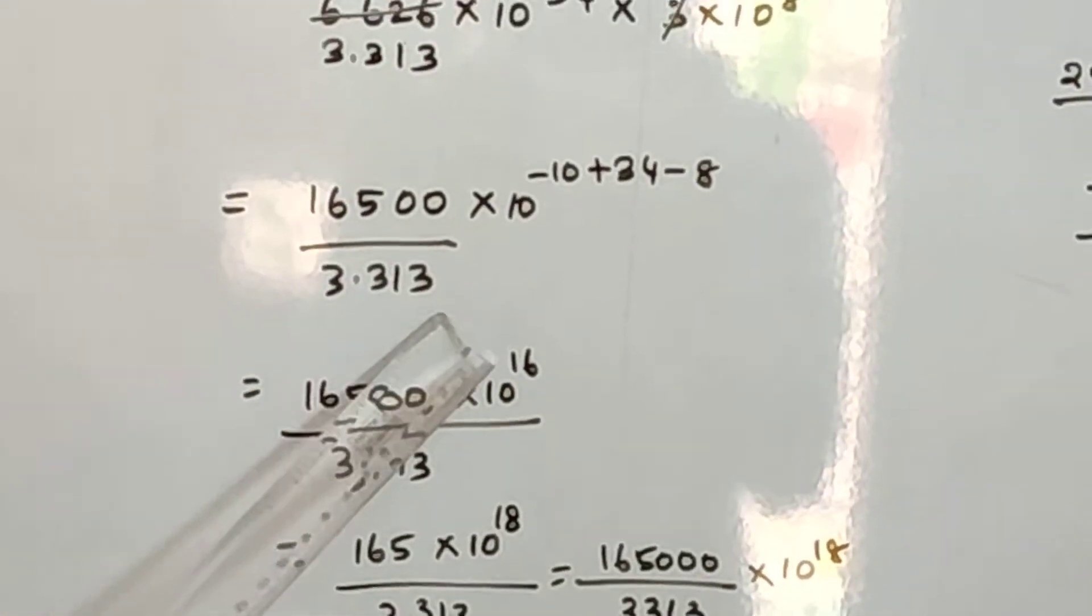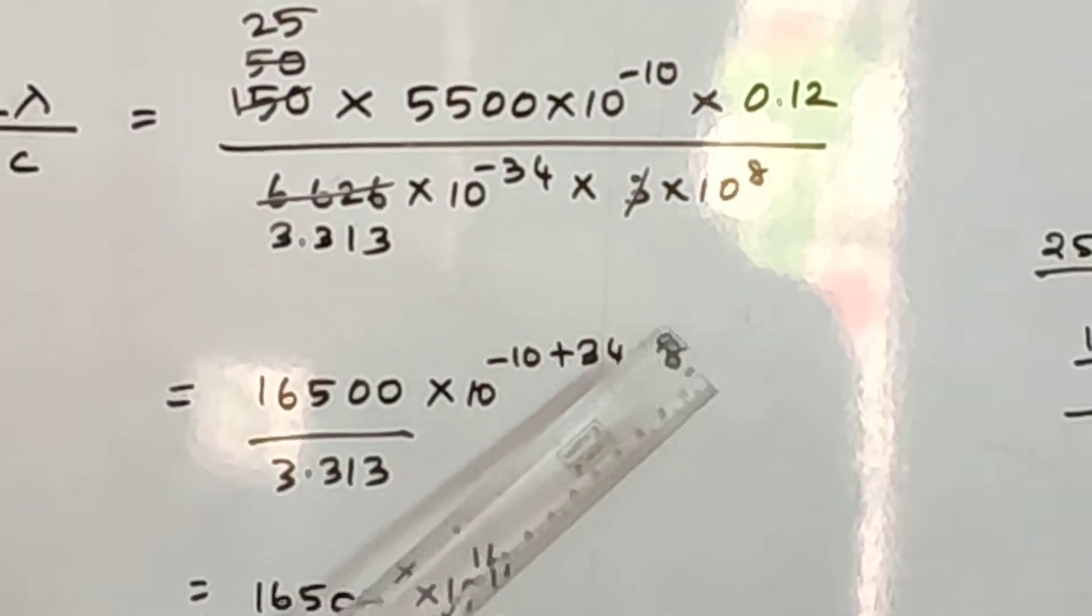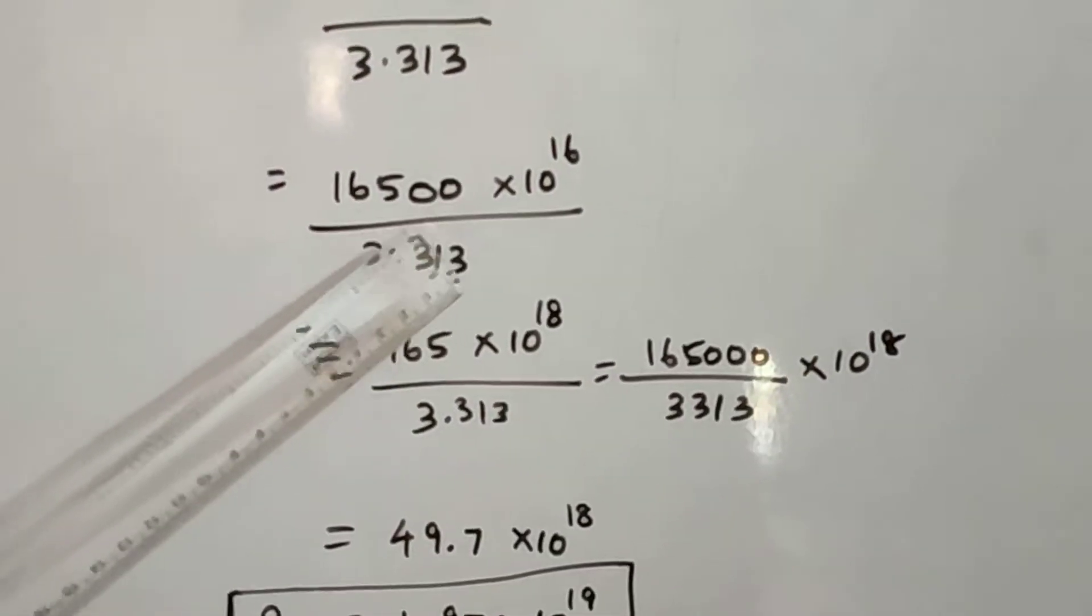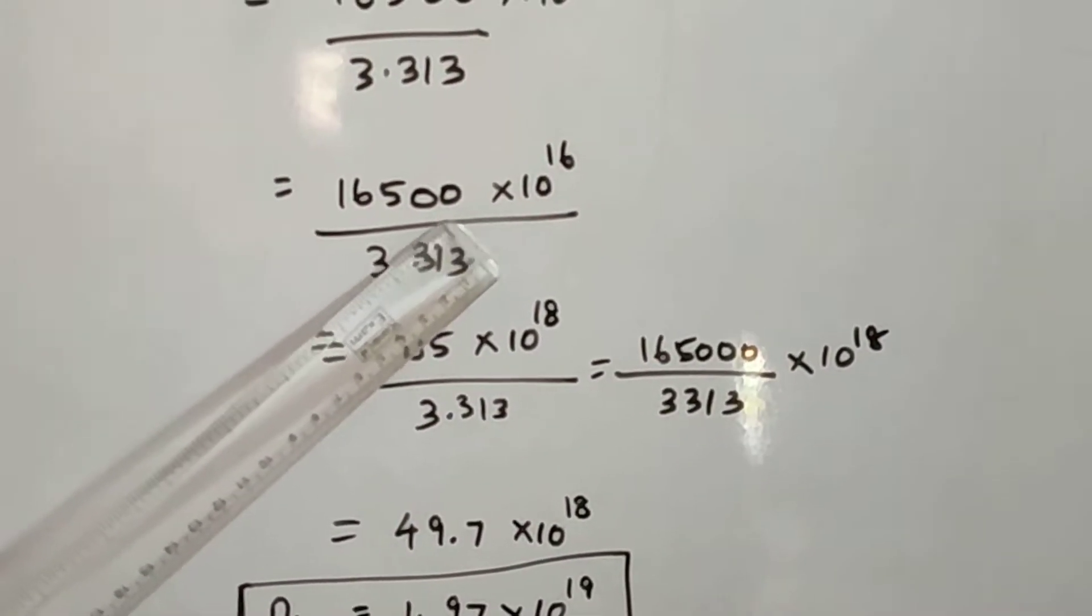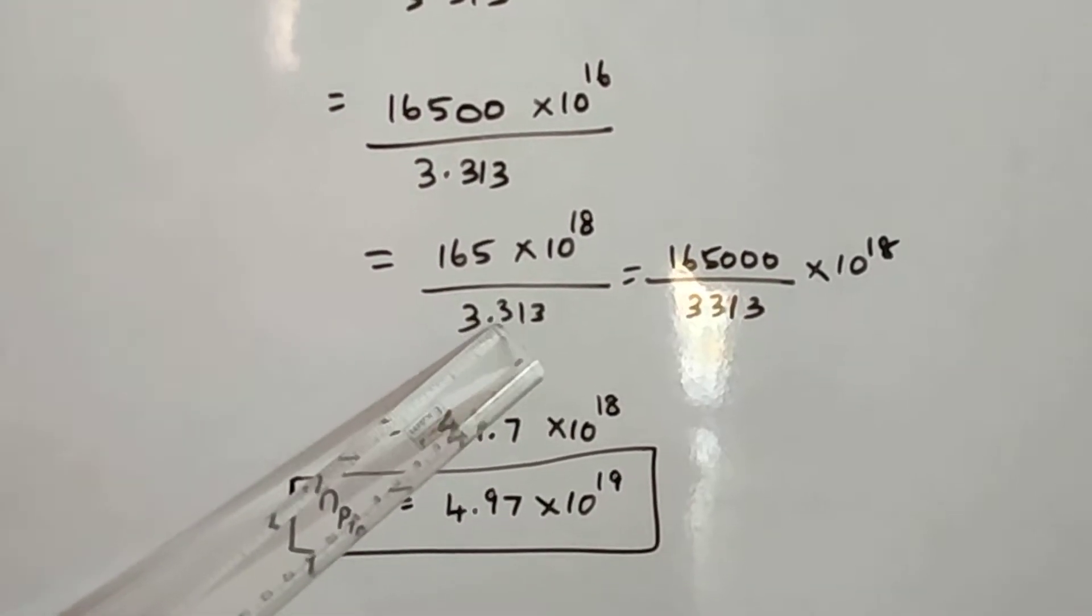So 16500 by 3.313 into 10 to the power of minus 10 plus 34 minus 8, that's 10 to the power of 16. If we add into 10 to the power of 2, we get 10 to the power of 18, so it is 165 by 3.313.